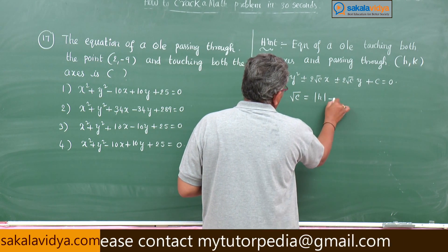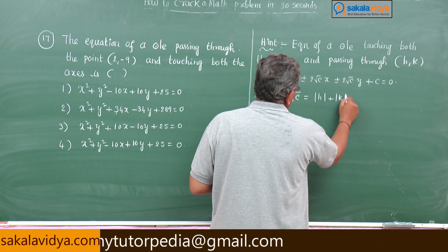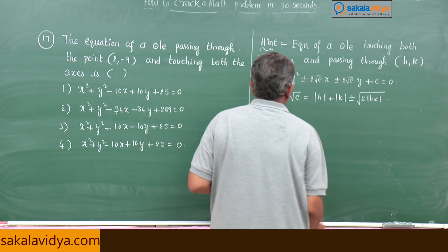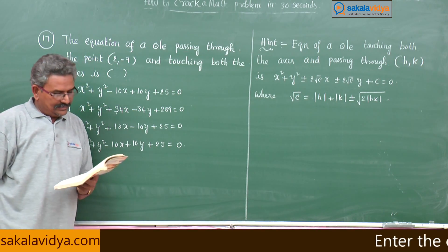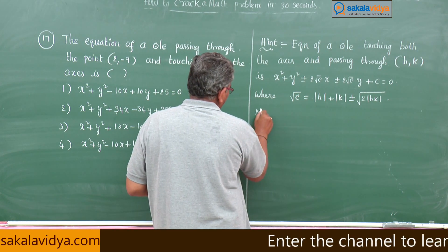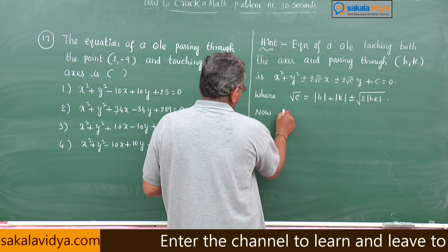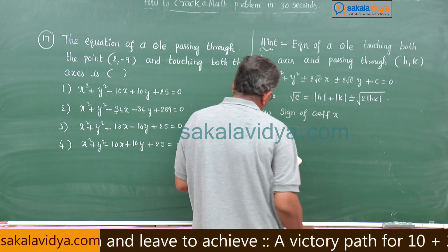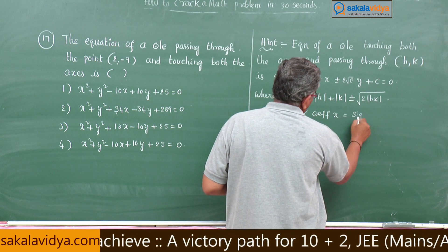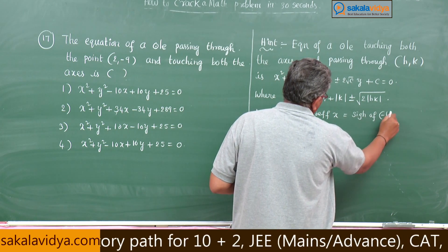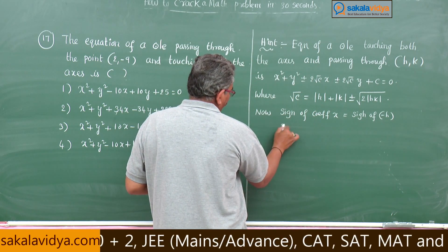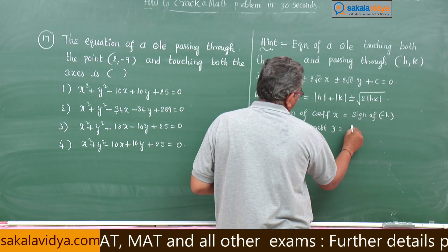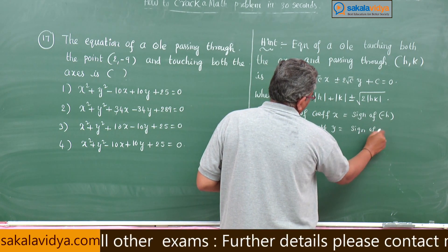Where √c = |h| + |k| ± √(2|hk|). The sign of the coefficient of x is taken as the sign of -h, and the sign of the coefficient of y should be taken as the sign of -k.